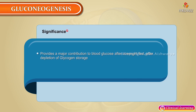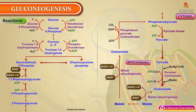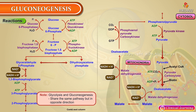Alanine is the most important gluconeogenic amino acid. Significance of gluconeogenesis: it provides a major contribution to blood glucose after an overnight fast and after depletion of glycogen storage. Supply of glucose is essential for erythrocytes and the brain.